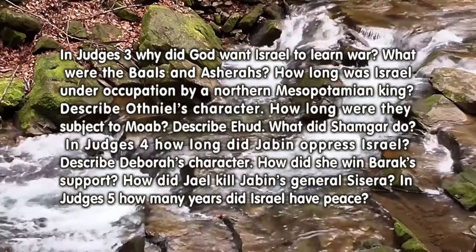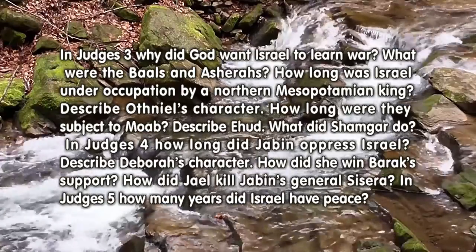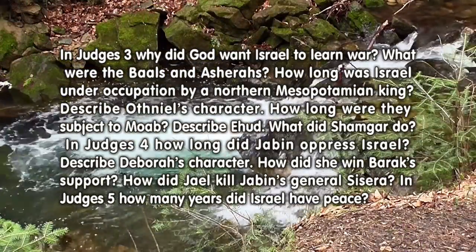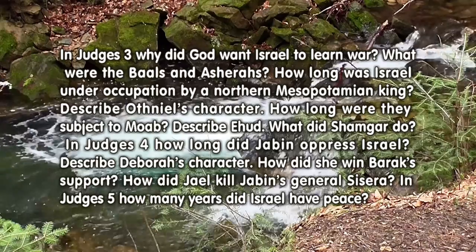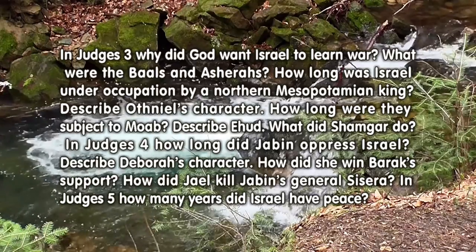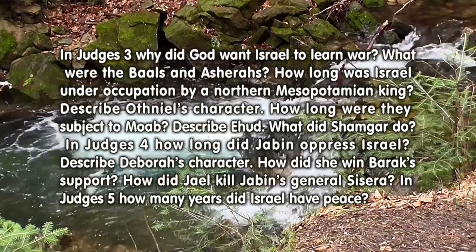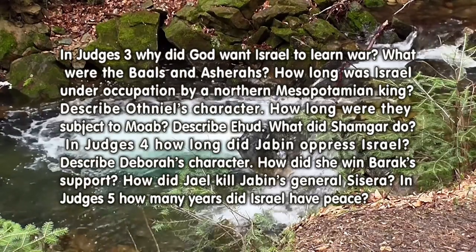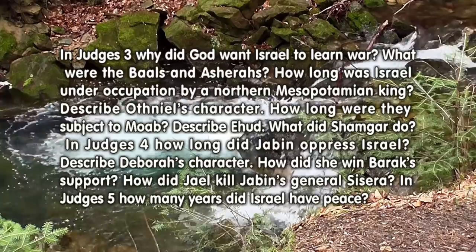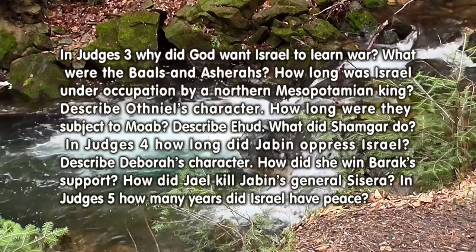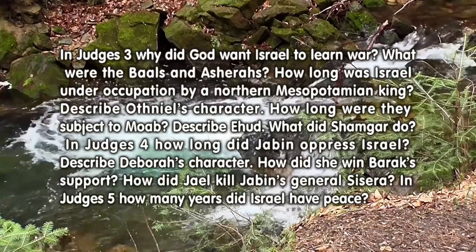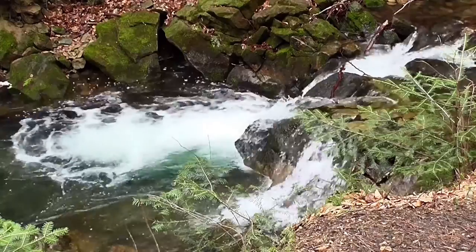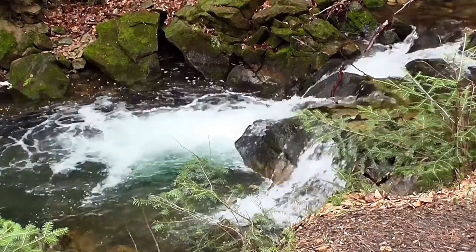In Judges 4, how long did Jabin oppress Israel? Describe Deborah's character. How did she win Barak's support? How did Jael kill Jabin's general Sisera? In Judges 5, how many years did Israel have peace?